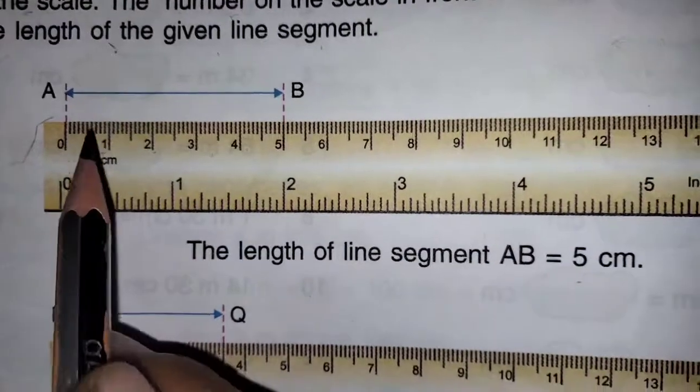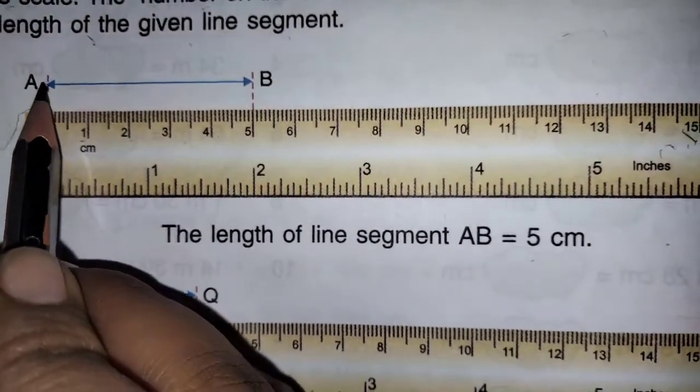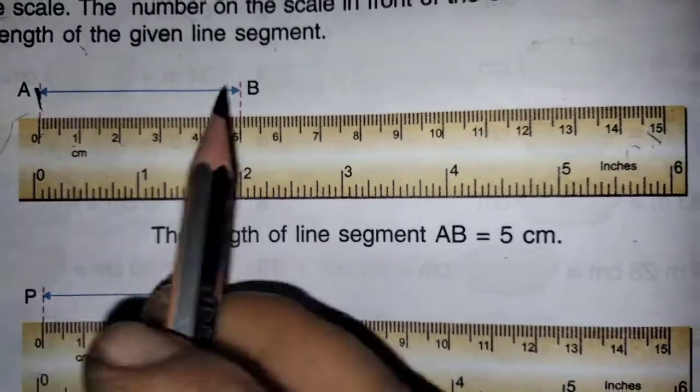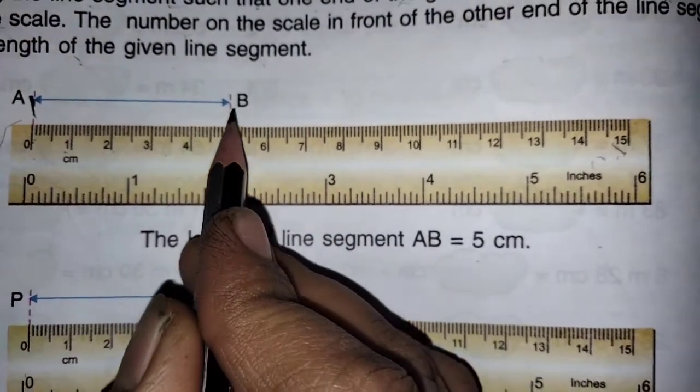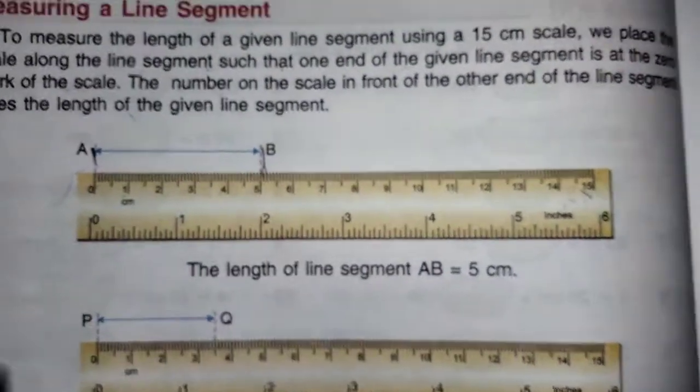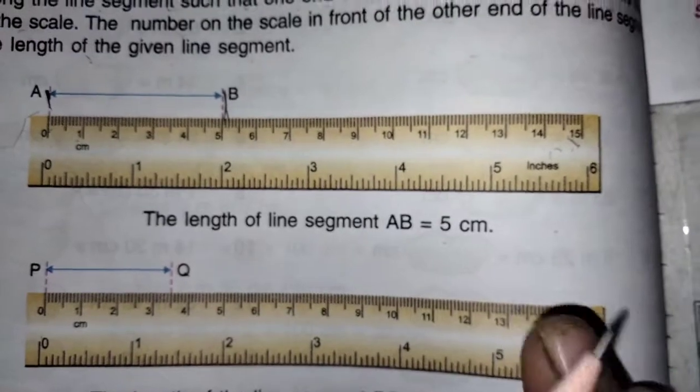First you have to see there, where is 0, there first you have to mark children. Then next, if they told to draw the line segment of 5 cm, then exactly you have to draw on the 5 cm. The length of the line segment AB is equal to 5 cm.